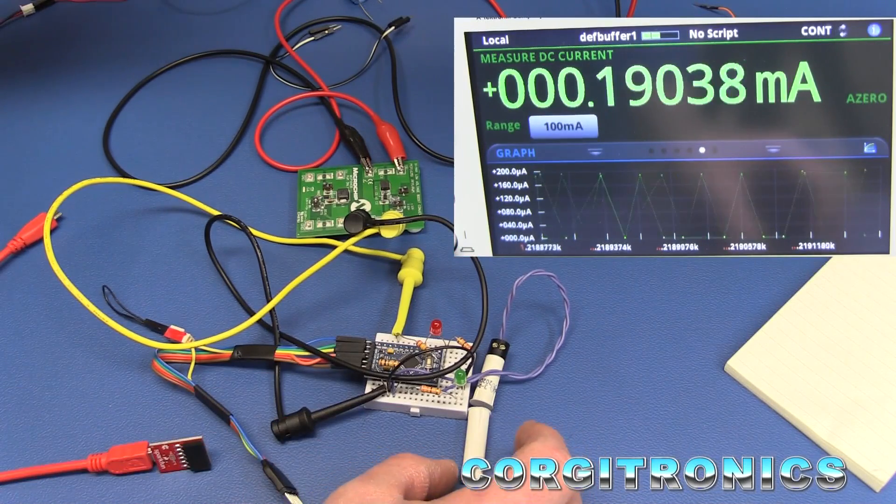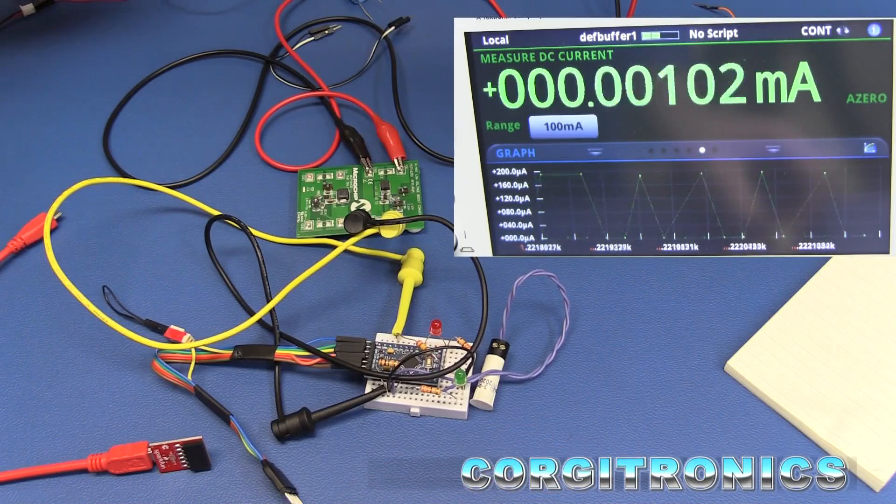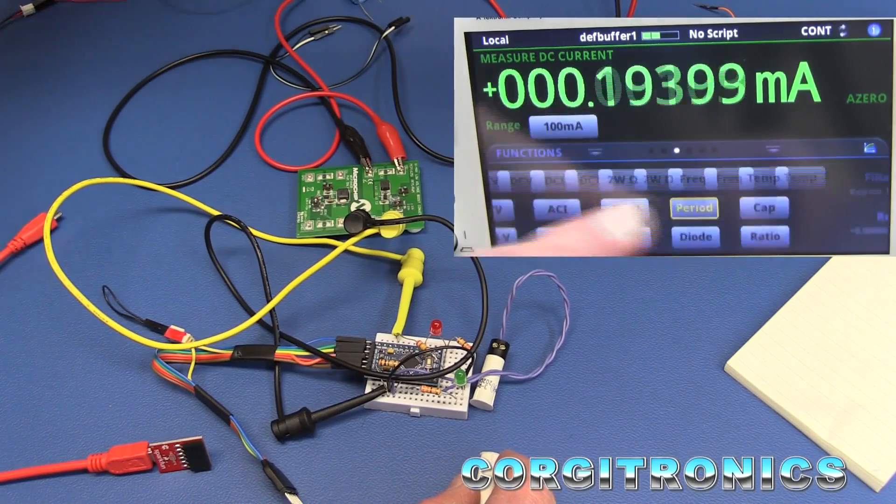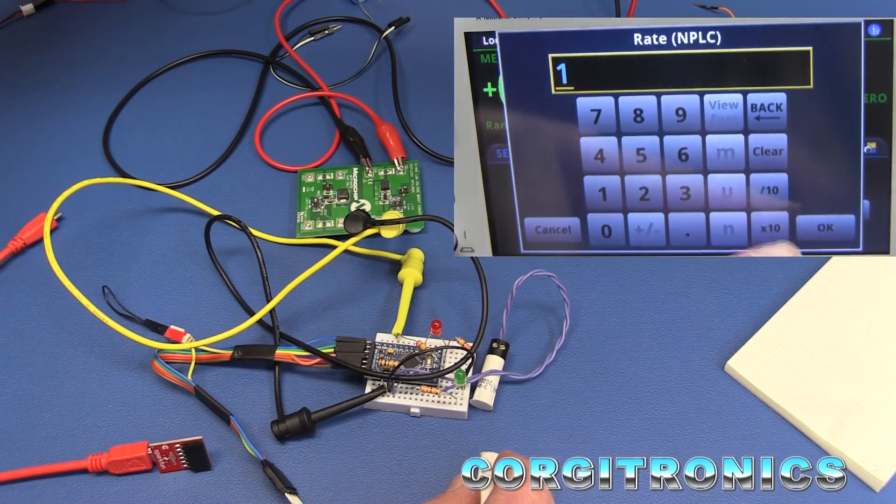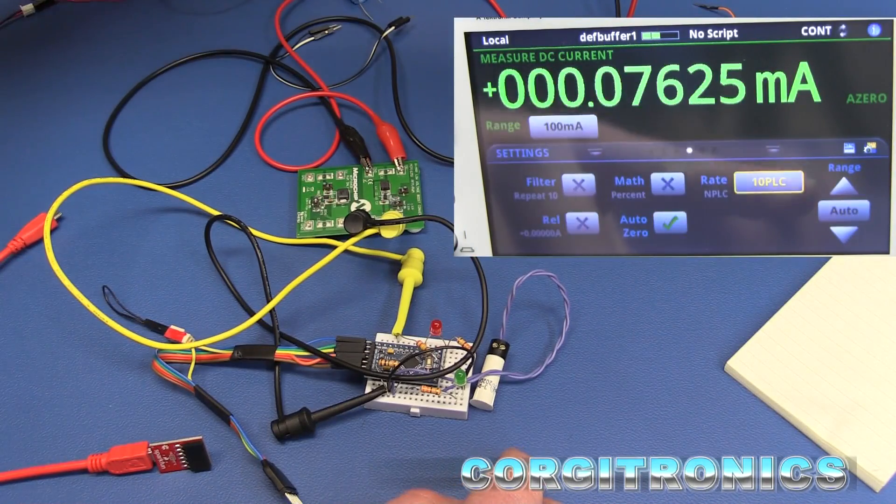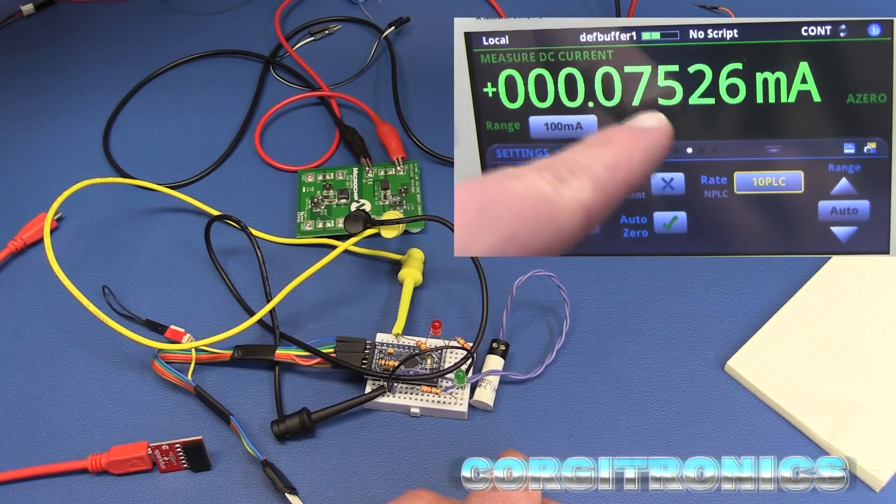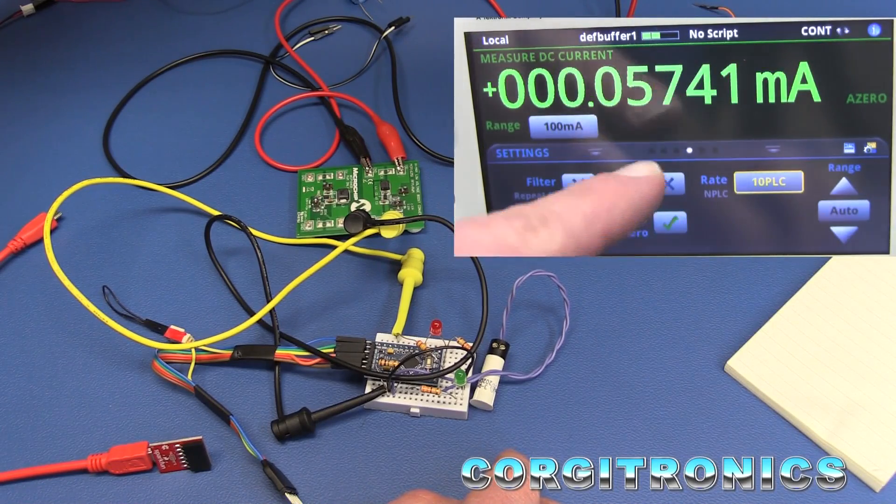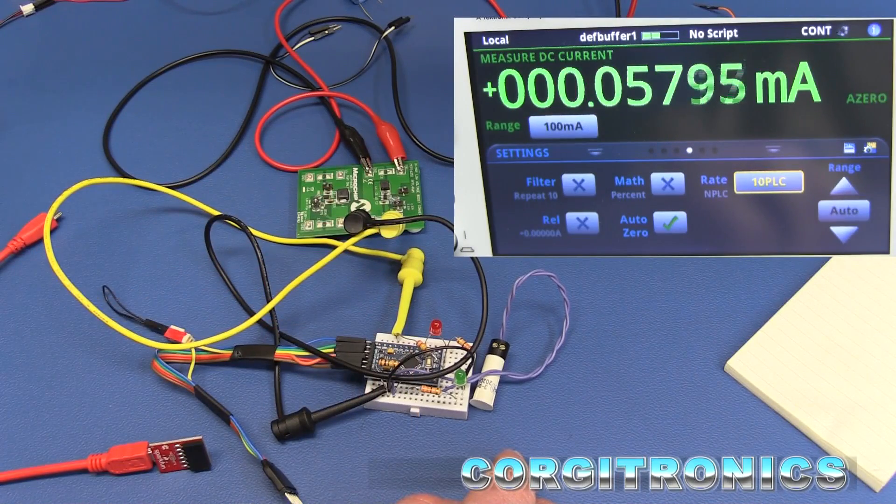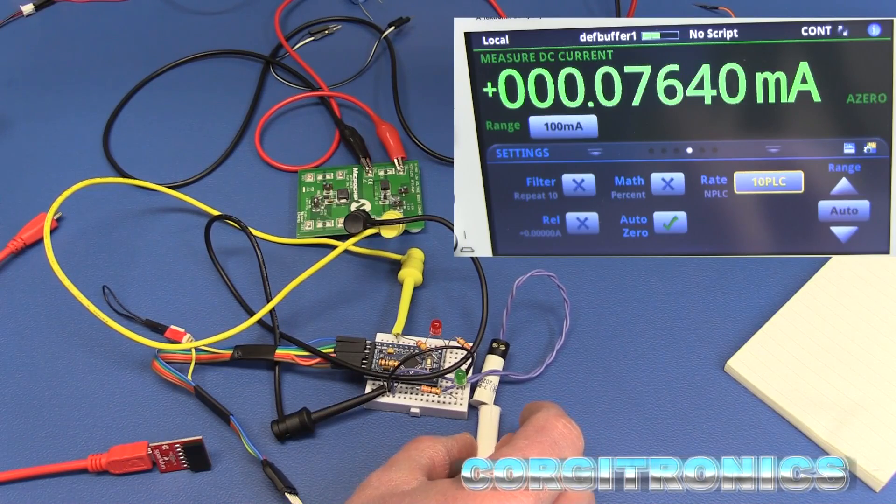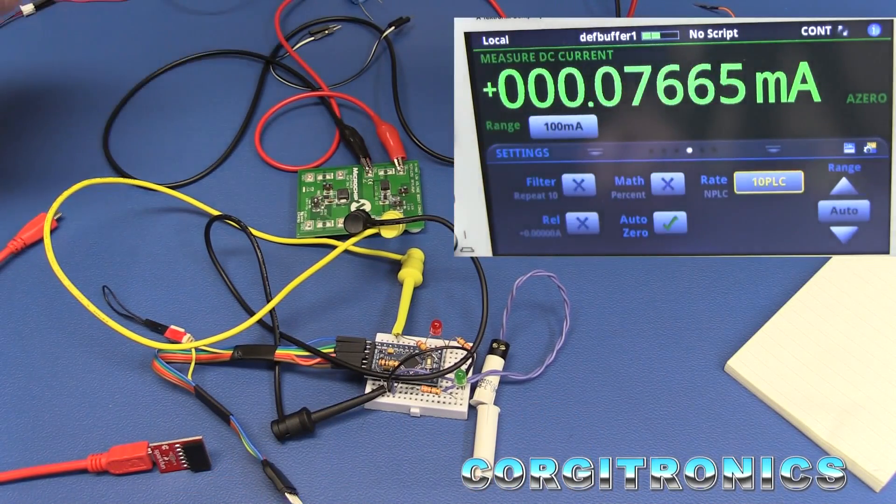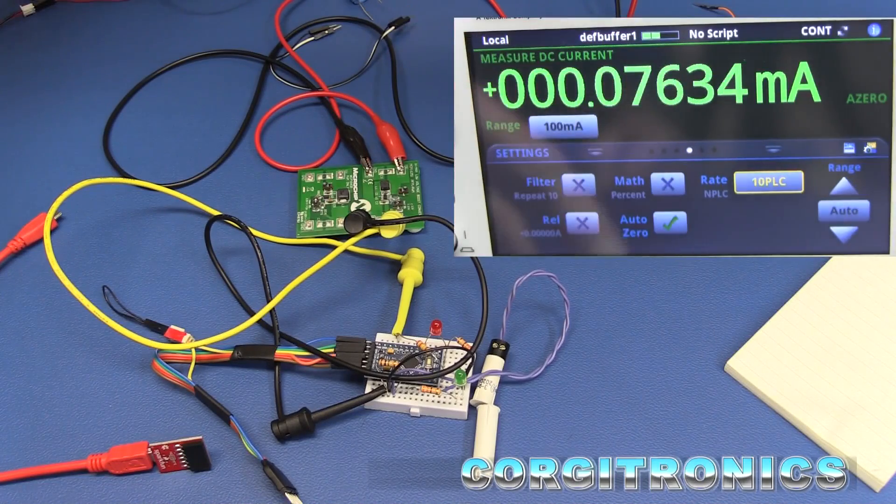As we move, we see the power consumption jump up. Now it's flickering all over the place. So I was thinking I'd do is let's go into 10 PLC and take a look at what our power consumption is like. We're seeing about 75, 76 microamps most of the time with the magnet away from the switch. We close in, we get a big jump to 22 milliamps it looks like, and then back down.